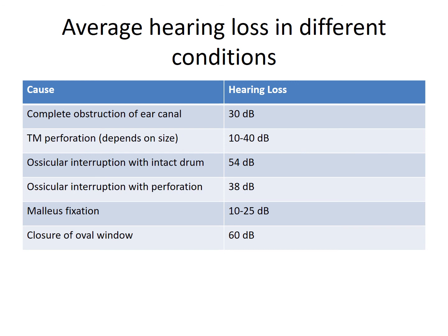If there is Malleus fixation, the average hearing loss can be between 10 to 25 dB. And if there is closure of the Oval Window, then the hearing loss is maximum, i.e. 60 dB.